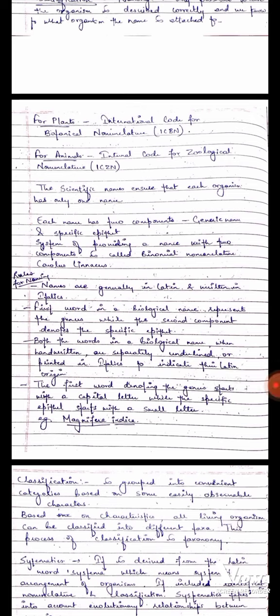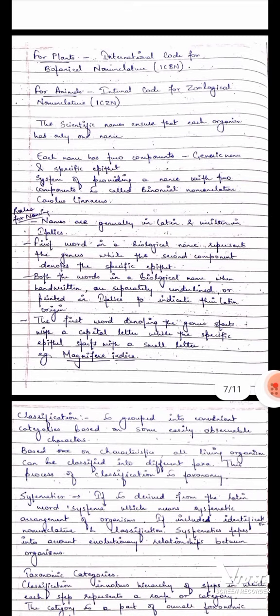The scientific names ensure that each organism has only one name. Each name has two components that is the generic name and the specific epithet. System of providing a name with two components is called binomial nomenclature. That was given by Carolus Linnaeus.